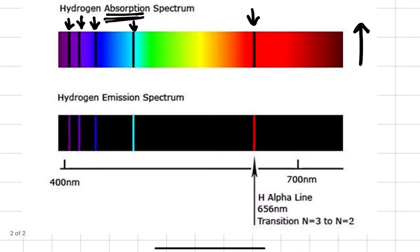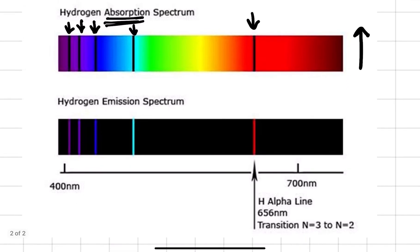The opposite is true for the hydrogen emission spectrum. When an electron moves from a higher energy level to a lower energy level, it's going to emit energy — it's going to emit photons, or packets of light. That's going to create colors on the emission spectrum, which we can see here.